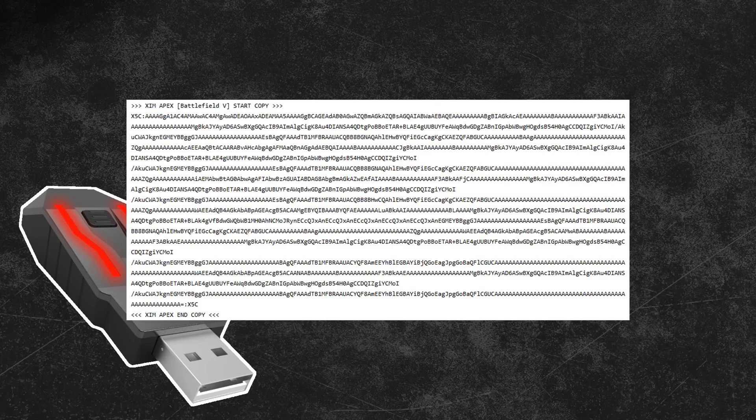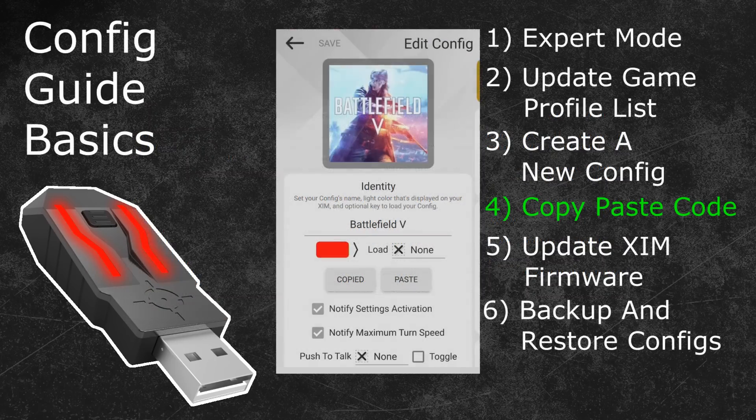If you want to use the code of a different player, make sure to copy the whole code including the arrows. After that create a new configuration for that specific game just like I showed you in the previous topic. The last step is to go into the editing menu of that configuration and press the paste button in the advanced settings. Your configuration will now be identical to the one that you copied the code from. This is a great way to share or copy the configuration of a different Zim user without having to manually adjust all of the Zim settings.